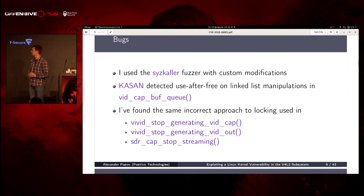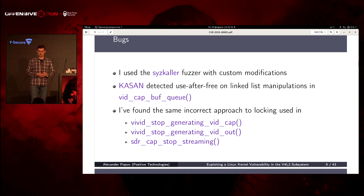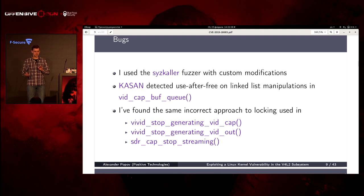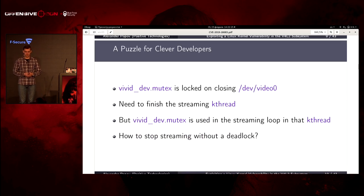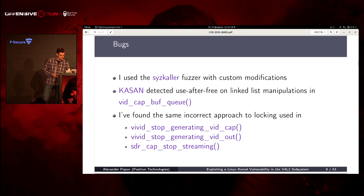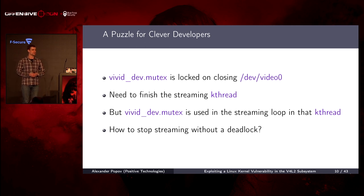What was the actual bug? I used syzkaller with custom modifications, and the kernel address sanitizer detected use-after-free on linked list manipulations in the vulnerable driver. I started to investigate, and the reason for this memory corruption was quite far from the memory corruption itself. It turned out there is the same incorrect approach to locking in three functions — just copied and pasted in three places.